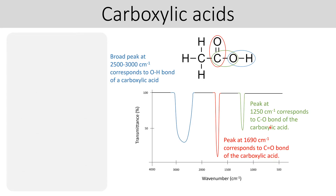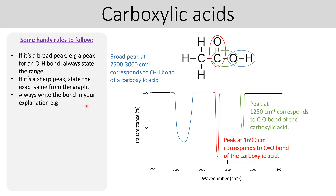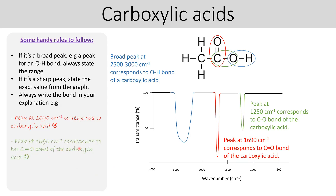Here are some tips. If it's a broad peak, state the range. If it's a sharper peak, just give the exact value from the graph. The only real broad ones you'll come across are likely to be the OHs and NHs. Always write the bond in your explanation. For example, a poor response would be: 'the peak at 1,690 corresponds to a carboxylic acid.' A better response is: 'it corresponds to the C=O of a carboxylic acid.' State the bond — don't just state the functional group.